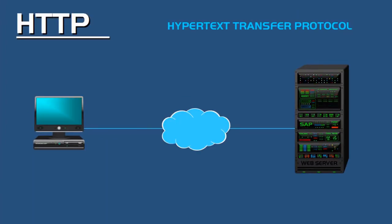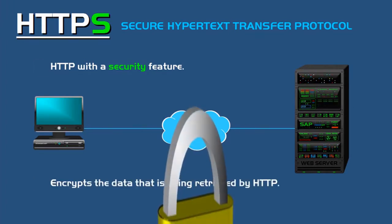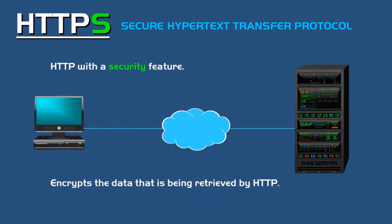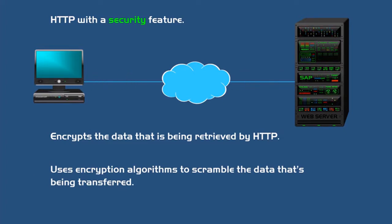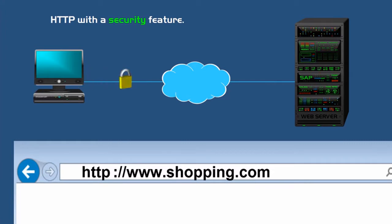And this is why HTTPS was developed. HTTPS stands for Secure Hypertext Transfer Protocol, and this is HTTP with a security feature. Secure HTTP encrypts the data that is being retrieved by HTTP. It ensures that all the data being transferred over the internet between computers and servers is secure by making the data impossible to read. It does this by using encryption algorithms to scramble the data that's being transferred. So for example, if you were to go to a website that requires you to enter personal information such as passwords or credit card numbers, you will notice that an S will be added to the HTTP in the web address.